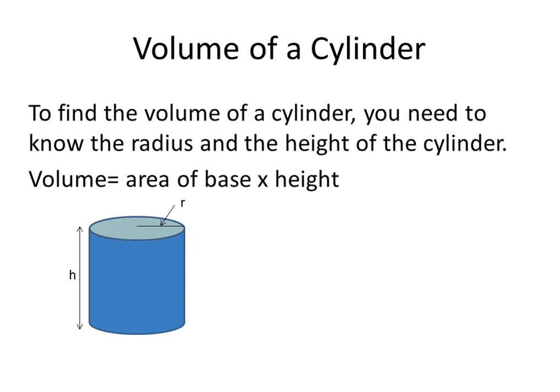To find the volume of a cylinder, you need to know the radius and the height of the cylinder. You are going to be finding the volume in a similar way that we found the volume of a prism. You take the area of the base and you times it by the height.